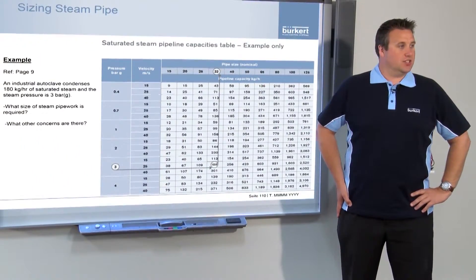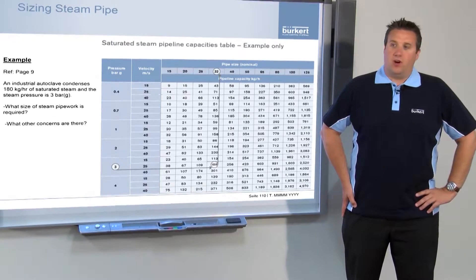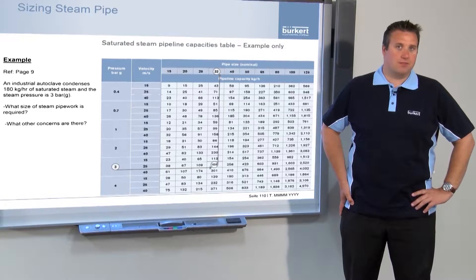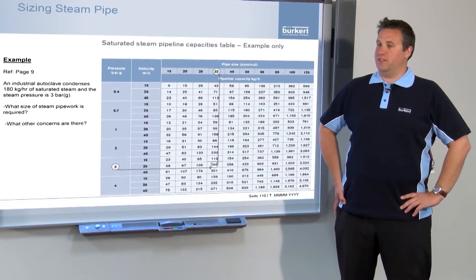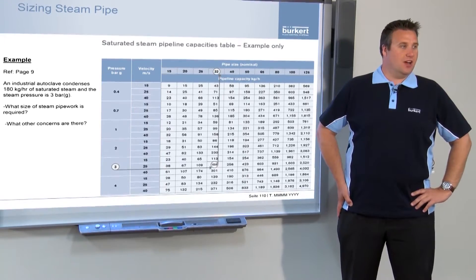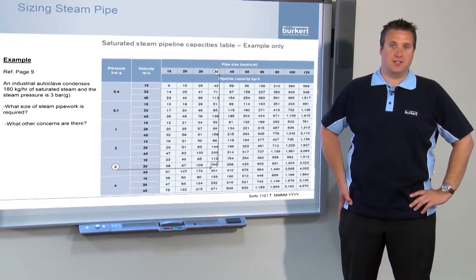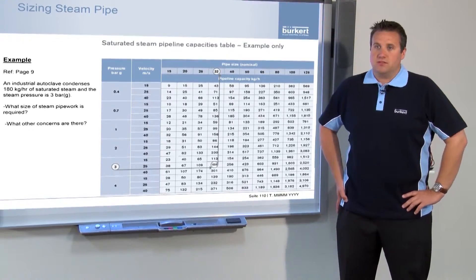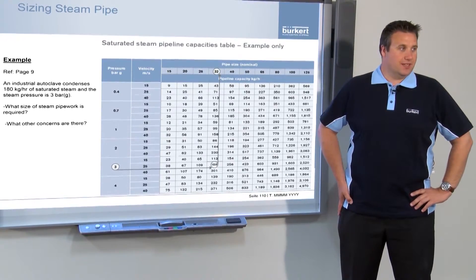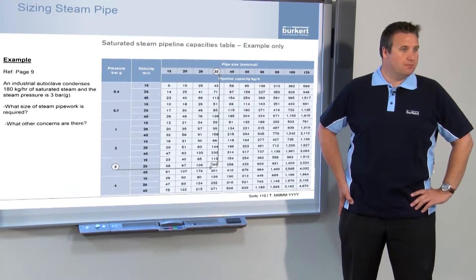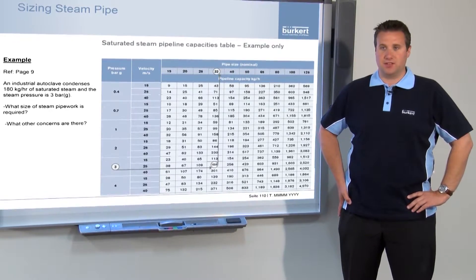We're now going to move on to how to size a steam pipe. For applications where we look at pipework less than 50 meters in length, we can use what we call the velocity sizing method. This is where we try to size the pipework using a steam velocity of around 25 meters per second. In practice, steam velocities can actually be between 15 and 40 meters per second, but the happy medium between both of these is the 25.